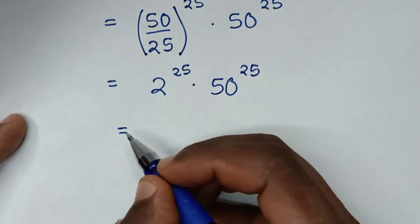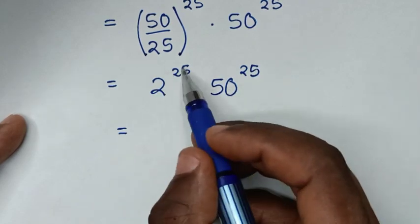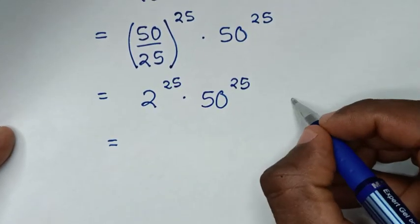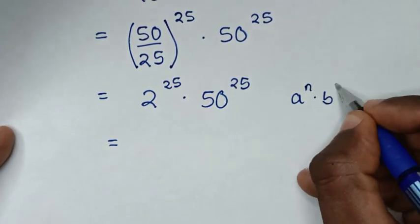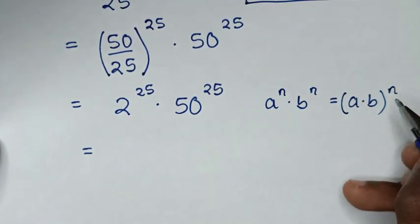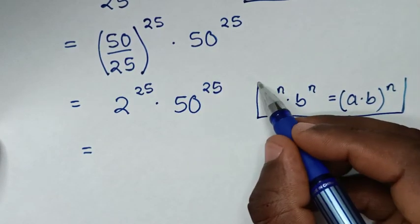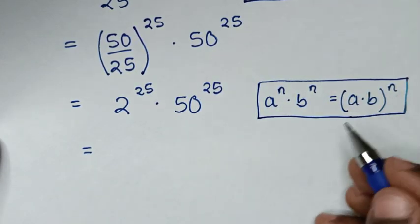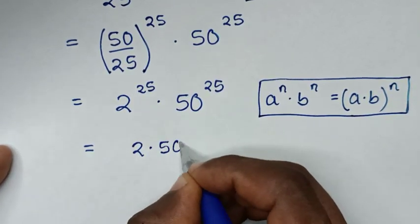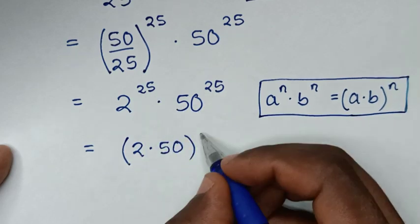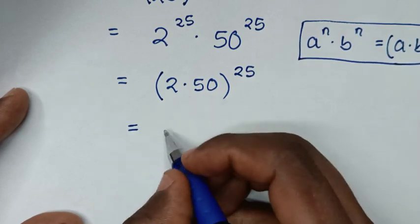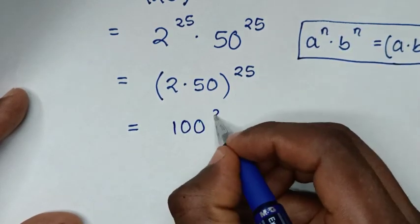Then here we have a multiplication of exponents with the same power of 25. This is in the form of a^n times b^n, which is equal to (a times b)^n. So we apply this form: 2 times 50, bracket to the power of 25. So it will be equal to 2 times 50 is 100, to the power of 25.